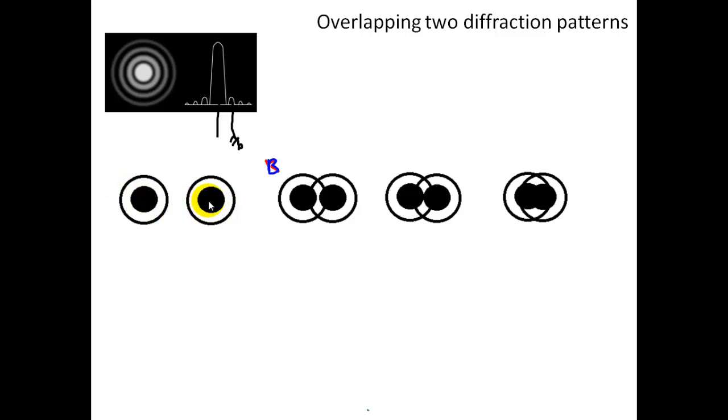These two are far enough apart, the angle is wide enough that they can be distinguished. This one also. This one is at the limit and it's basically when the first minima coincides with the maxima of the other image, the other diffraction image. Here they will not be resolved because they will form one blur, one continuous image.